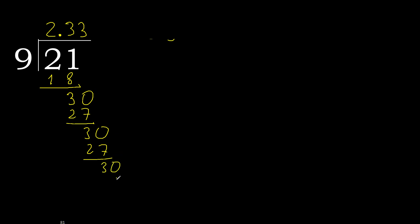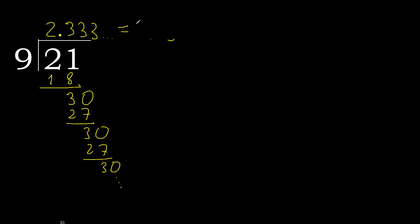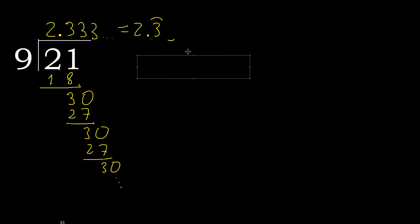Repeat — therefore repeat — repeat — therefore 3 — repeat. Repeat: 21 divided by 9 is here, or after the point, 3 — repeat. Therefore like this — repeat.